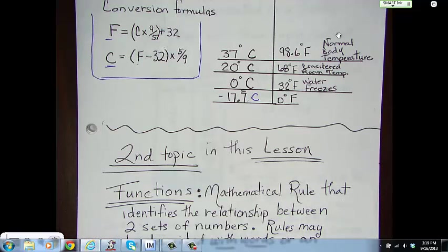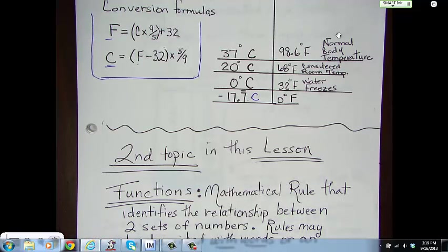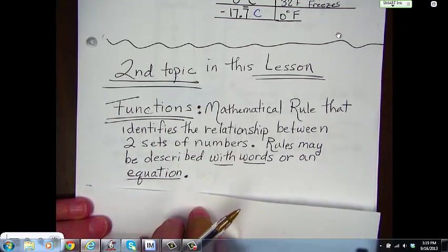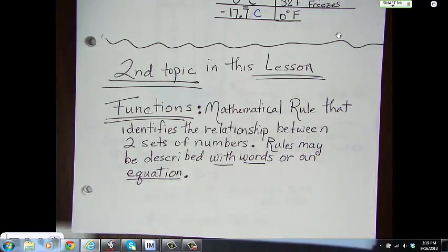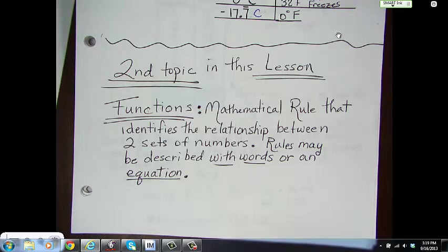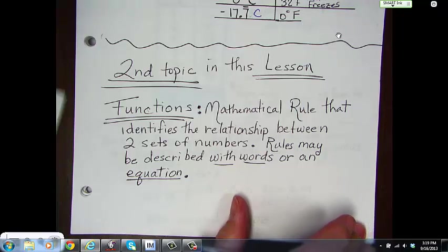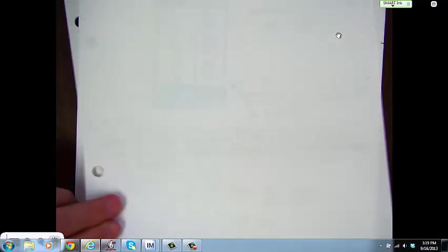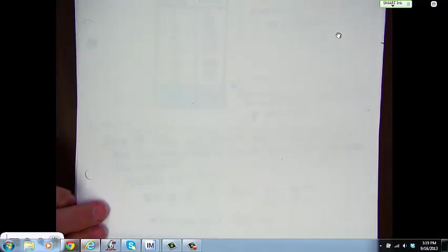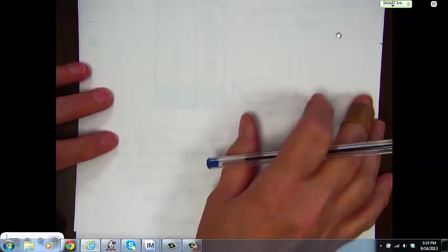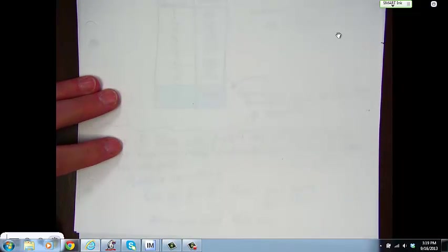Second topic in this lesson is functions. Now, functions are mathematical rules that identify relationships between two sets of numbers. Rules may be described with words or with an equation. The relationship between two sets of numbers is called a function. And, it may be illustrated in a table. We often call these input-output tables.